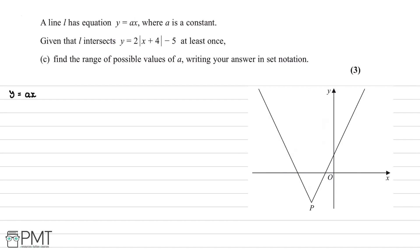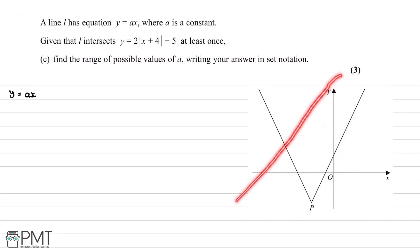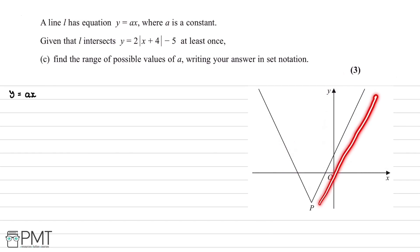In part (c), we're told that line L has the equation y = ax, where a is a constant, and that L intersects the curve y = 2|x+4| - 5 at least once. We need to find the range of possible values of a in set notation. The line y = ax passes through the origin with gradient a, and we can see visually that some lines will intersect the curve twice, once, or not at all.